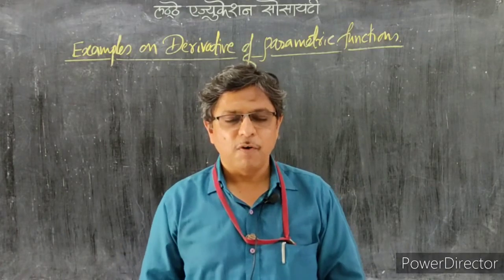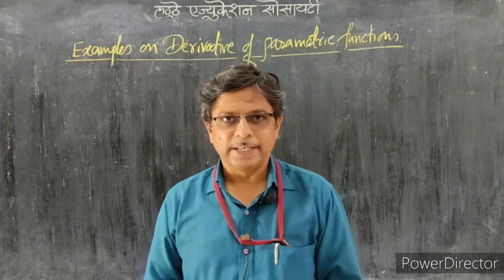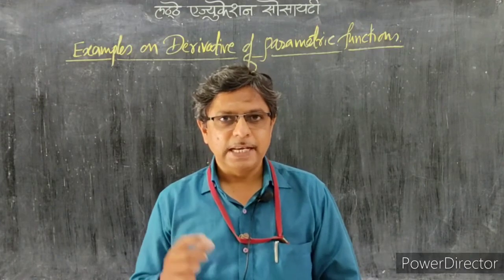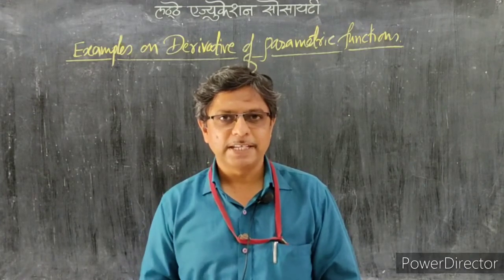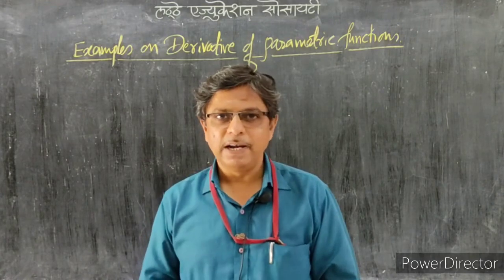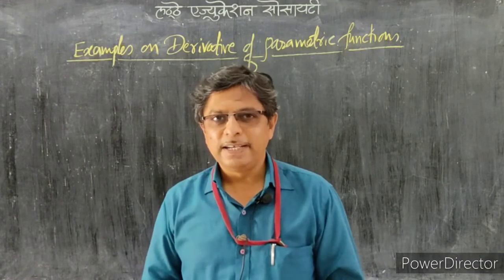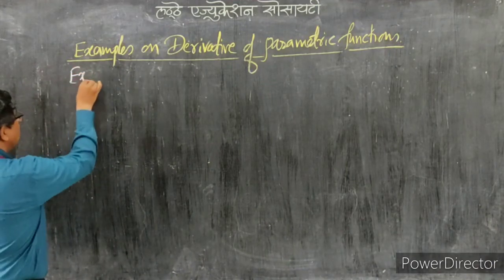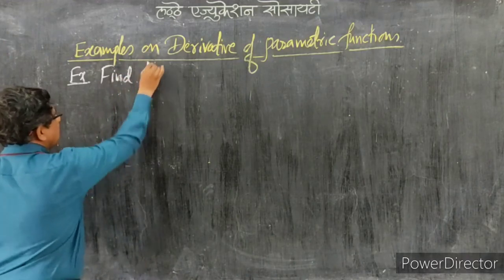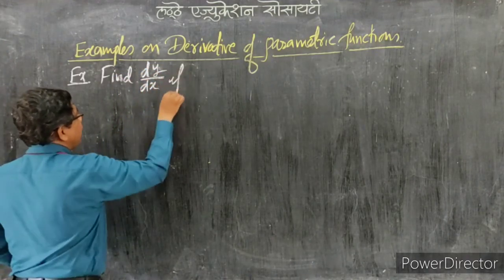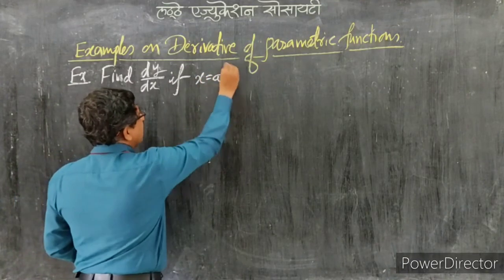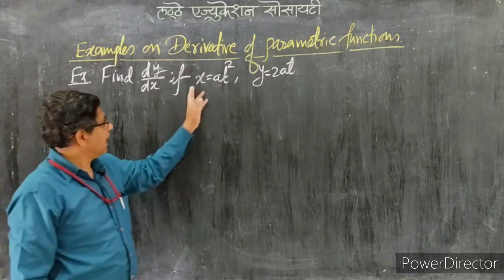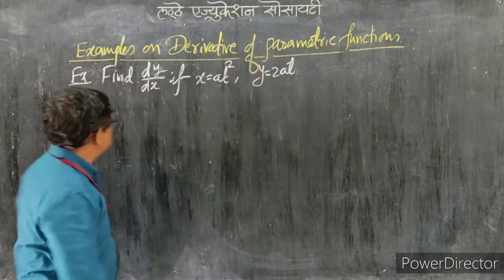We have seen the formula for derivative of parametric functions: if x = f(t) and y = g(t) are parametric functions in t, then dy/dx = (dy/dt) / (dx/dt). Now we will go for an example. Find dy/dx if x = at² and y = 2at, where a is a constant and t is the parameter. Both x and y are functions of t.